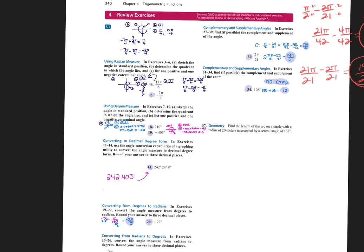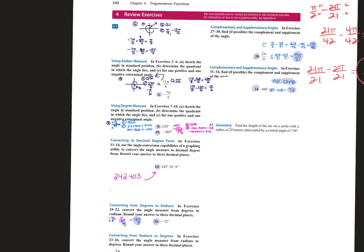Problem 8. So it says, sketch the angle in standard position to determine the quadrant which the angle lies, and list one positive and one negative coterminal angle.